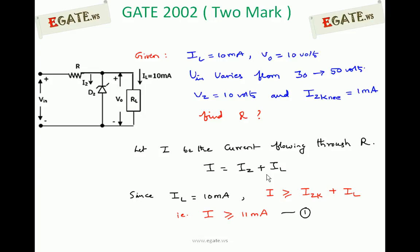Since IL is 10mA constant, I can be written as Iz + 10mA. But as I varies when input changes from 30V to 50V, we can generalize the equation as I ≥ IzK + IL. The current flowing through R must be minimum of Iz minimum plus IL, or more. So I ≥ 11mA, because Iz knee is 1mA and IL is 10mA. This is the standard equation from the circuit diagram, which will be used to calculate R.